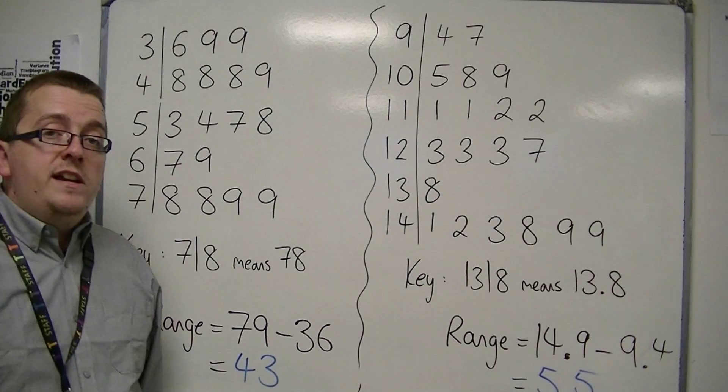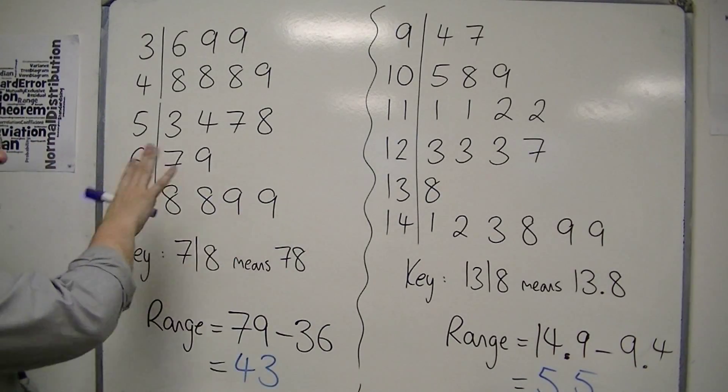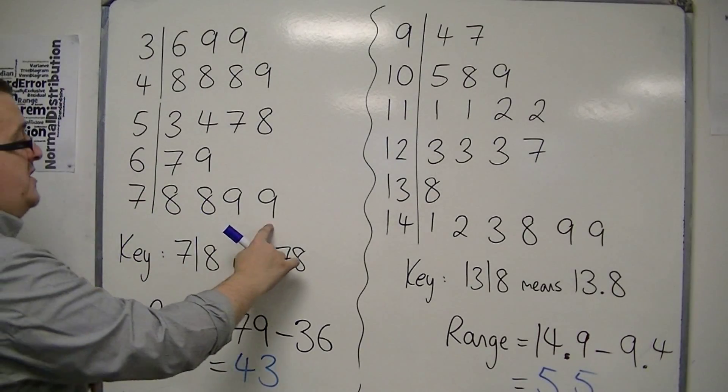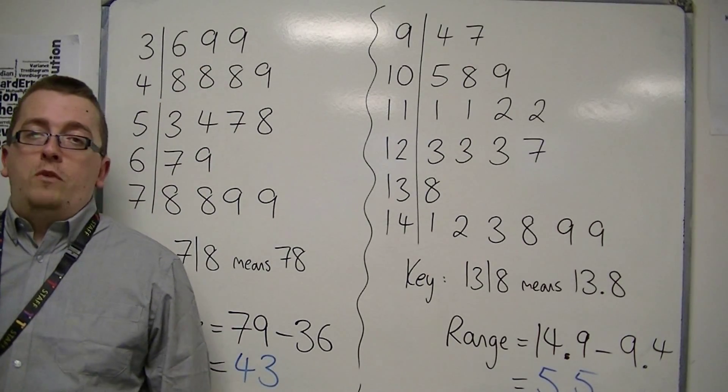So keep an eye on what the key is telling you, what the data was originally. OK, but it is the last number in the list, take away the first number in the list, that will get you the range.